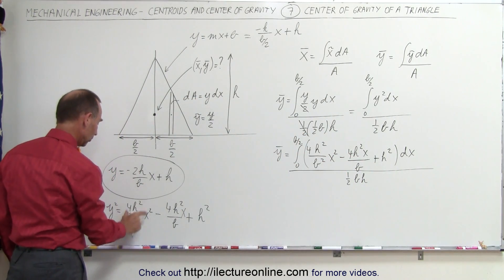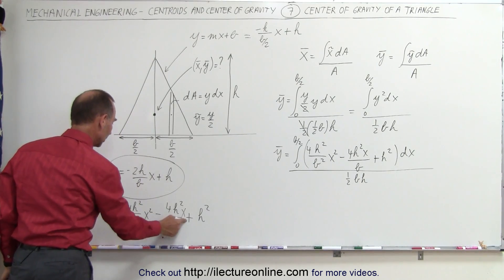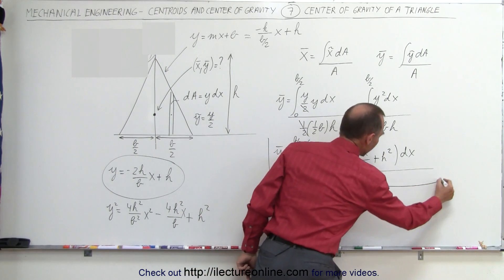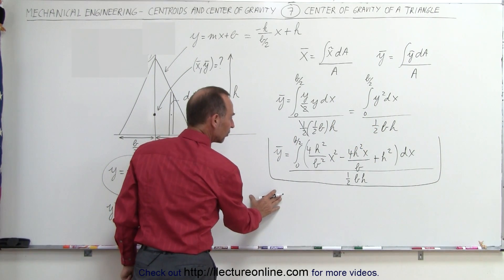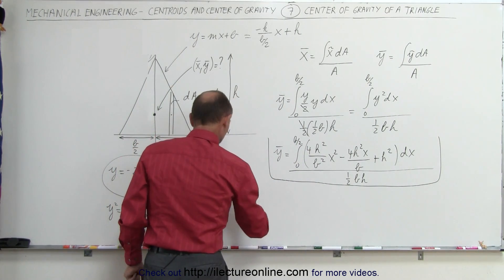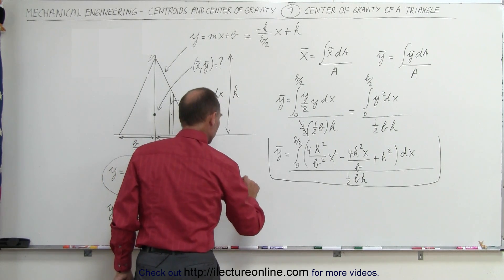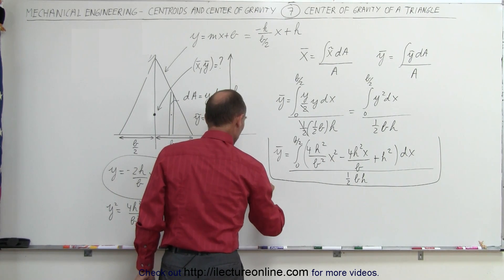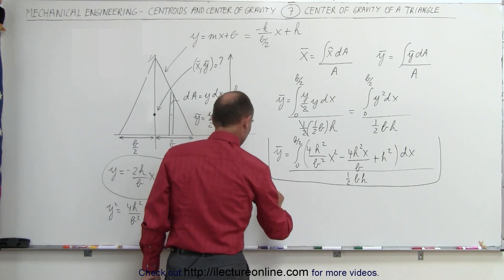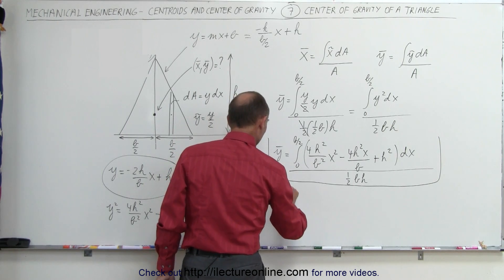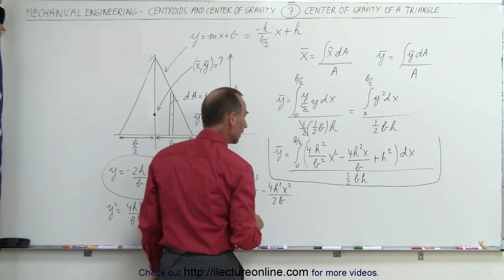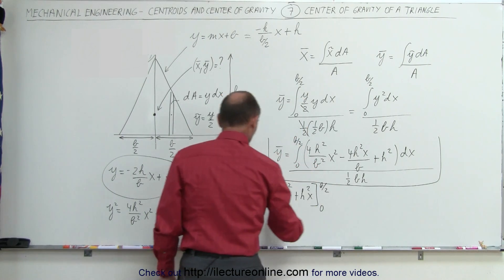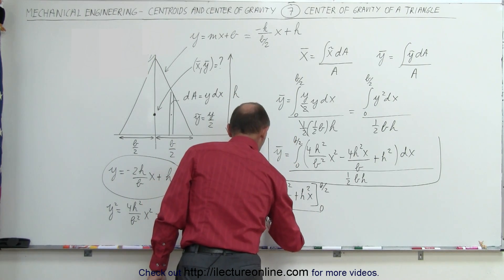Let's quickly verify: the first term squared, the last term squared, and twice the product of the two — good. Now let's integrate. We get the y-coordinate of the center of gravity equals: integrating gives 4h² x³ divided by 3b², minus 4h² x² divided by 2b, plus h² times x. The whole thing is evaluated from 0 to b/2, divided by one-half b times h.